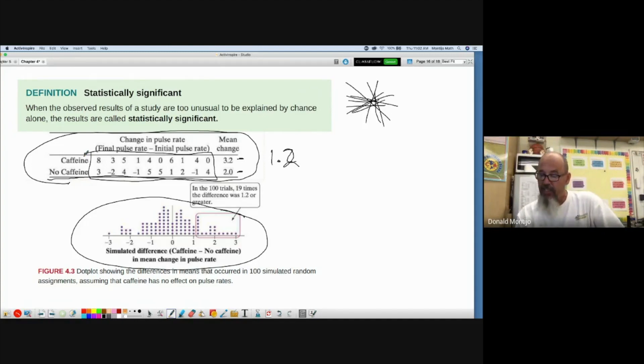We found the mean change in each of the two groups. In the 100 times we did this, 19 times there was a difference of 1.2 or greater. So just by random chance alone, even if there is no difference, 19 out of every 100 times we would expect a difference of 1.2 or more.